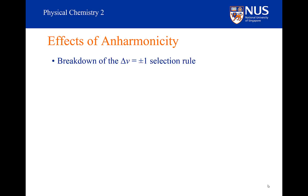Because the energy levels are getting closer and closer together, the specific selection rule that delta V is equal to plus or minus 1 breaks down. It means that we can see a transition from say V equals 0 to V equals 2, or V equals 0 to V equals 3. These overtones become allowed. But the transitions where delta V, the change in the vibrational quantum state, is greater than 1 are very much weaker.